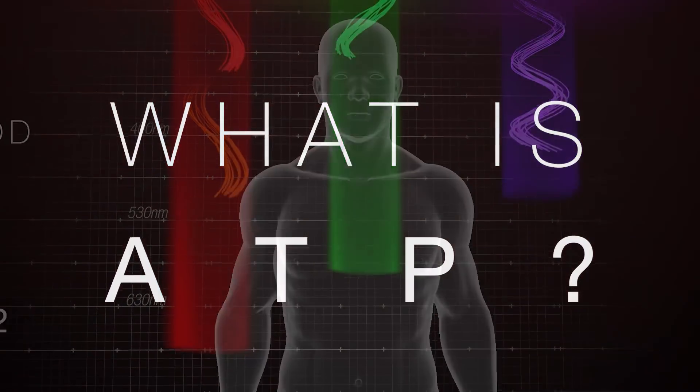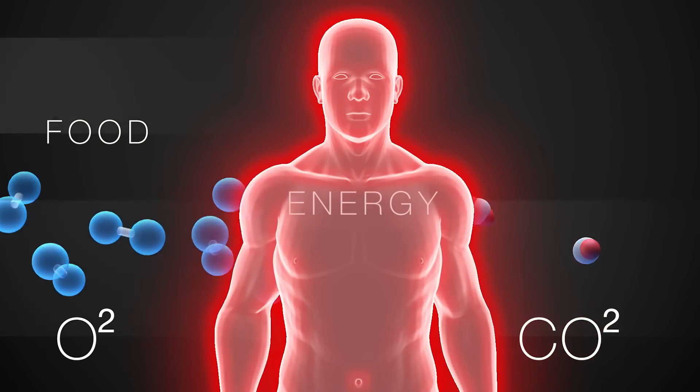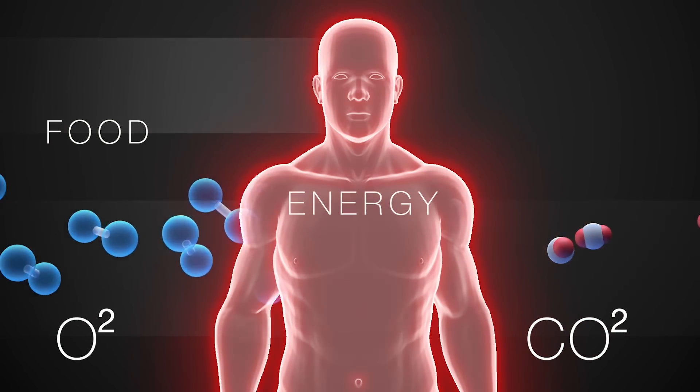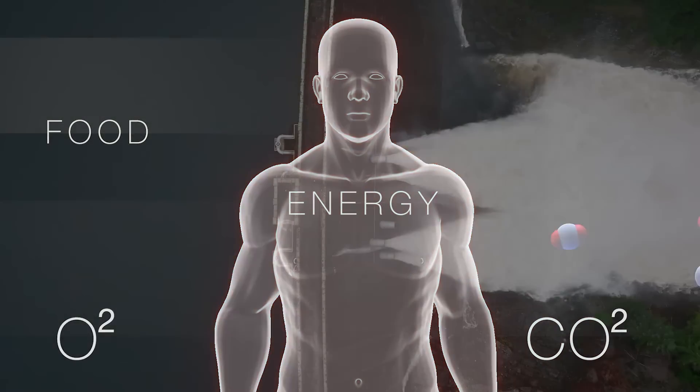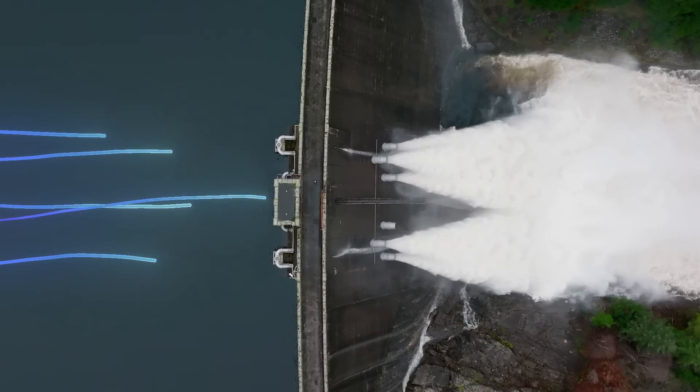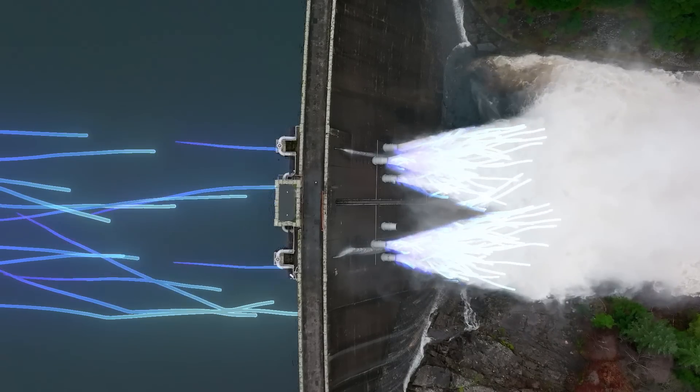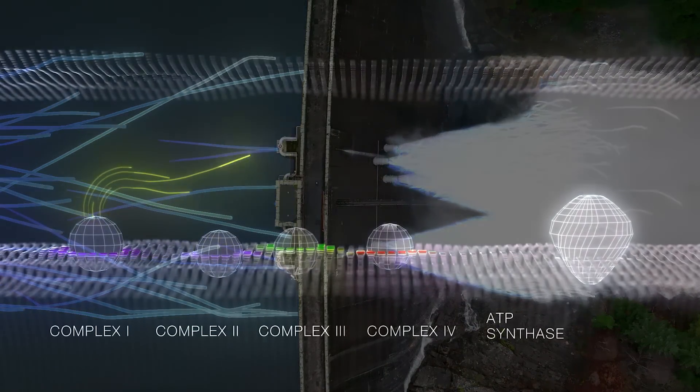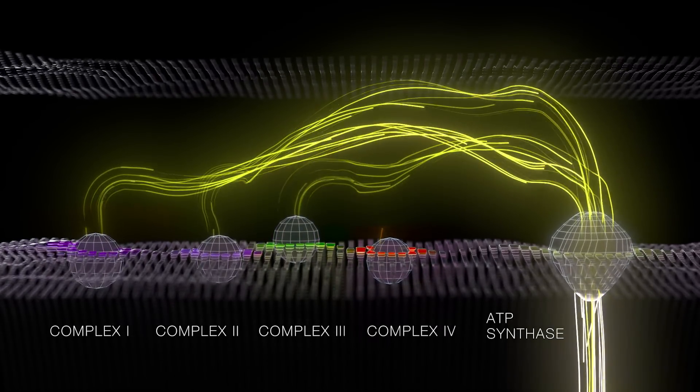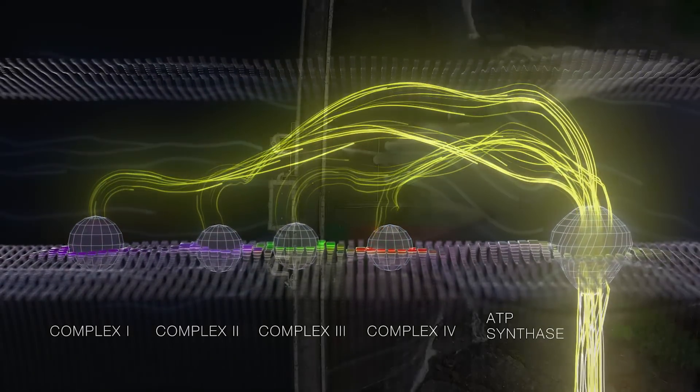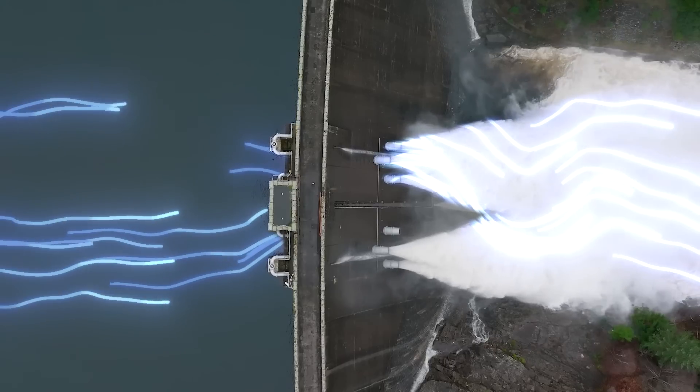So what is ATP? It's the energy currency our cells use to power our entire bodies. Just like water flowing through a power plant to produce electrical energy, electrons flow through complex enzymes producing ATP energy in our cells.